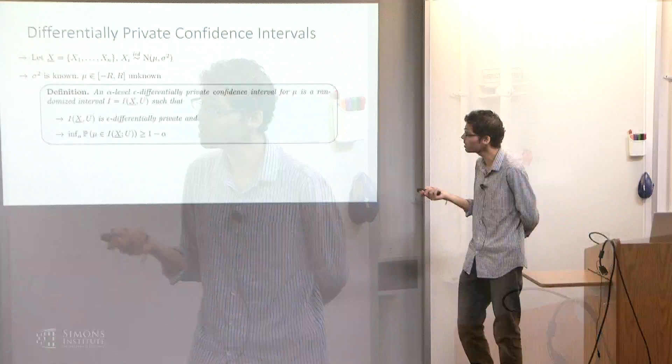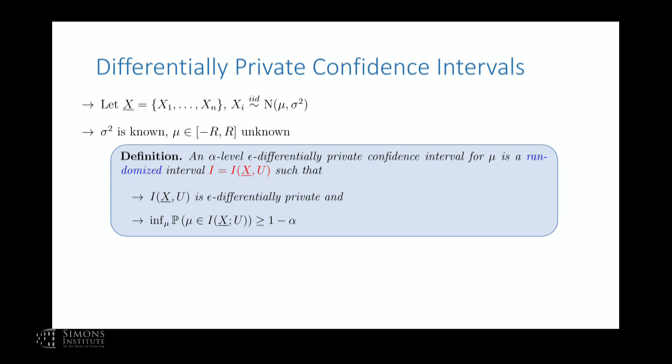What is a confidence interval? Here's a formal definition. An alpha-level epsilon-differentially-private confidence interval for parameter mu is a randomized interval — it is random because of privacy, with two sources of randomness: one from the data and one from the privacy mechanism. The first requirement is that this estimator should be epsilon differentially private. The second requirement is that it should have the right coverage: the probability that the true parameter lies inside this interval should be at least 1 minus alpha for all mu. This is the 95% guarantee. And we want this to hold for every finite n, not just asymptotically.